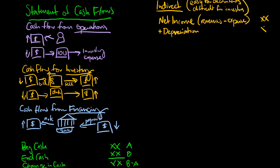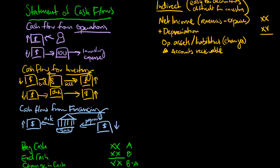So we start with our net income, we add back our depreciation. Then to view the differences in cash flows, we focus on our operating assets and liabilities — specifically the changes in these accounts. When we collect cash from customers for sales, that is typically tied to our accounts receivable. If accounts receivable increases during the year, that means fewer people are paying off their accounts, which means we're receiving less cash. So an increase in an asset such as accounts receivable is going to decrease our cash flows.